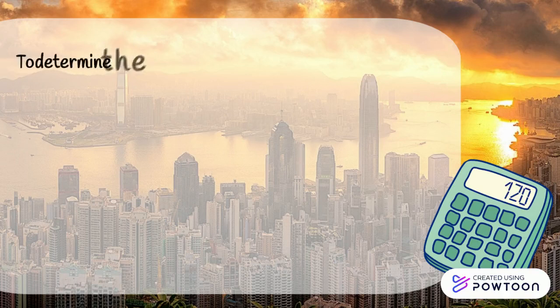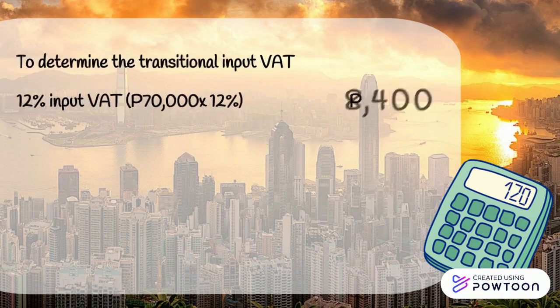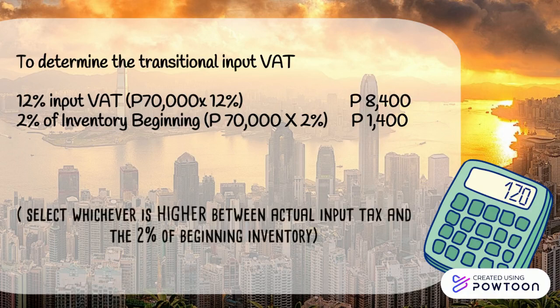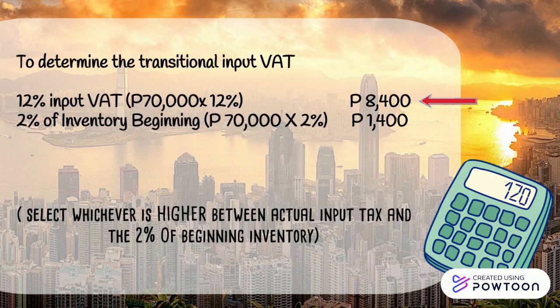To determine the Transitional Input VAT, we need to get 12% of P70,000, which is P8,400, and for the beginning inventory, that's 2% of P70,000, which is P1,400. So we need to select whichever is higher between the Actual Input Tax and the 2% of Beginning Inventory. It is clearly shown above that our Actual Input Tax is higher, and so our Transitional Input VAT would be P8,400.